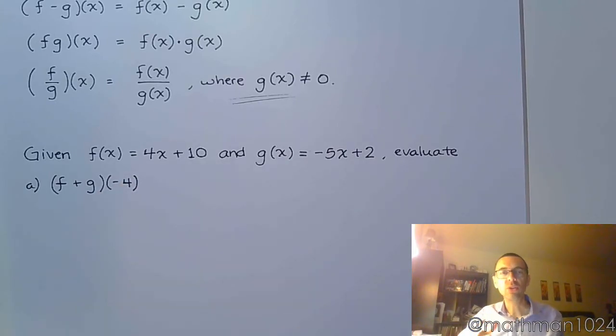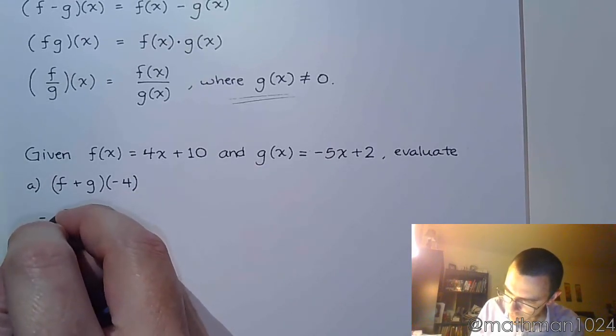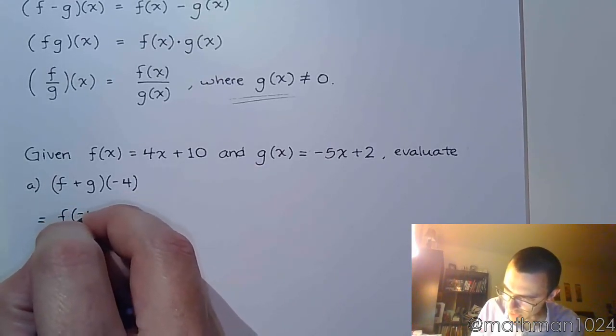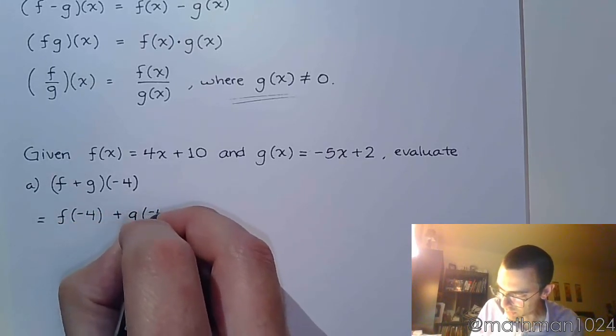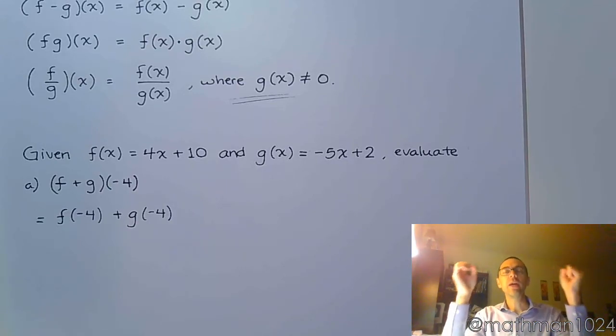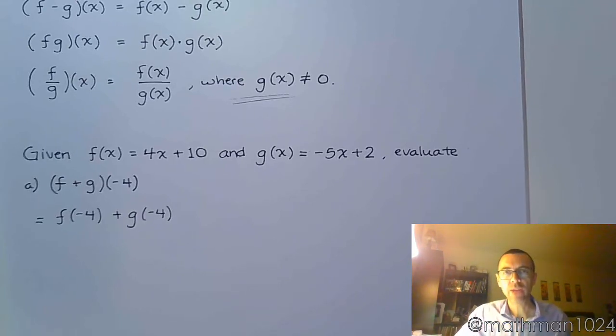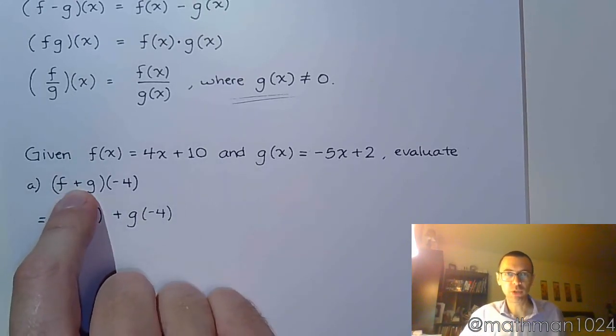The easier way, though, is to understand that all we need to do is say f(-4) + g(-4) like this. In other words, take f and evaluate that at negative 4. Take g and evaluate that at negative 4. So do them separately. And then bring those answers together according to whatever the function says. In this case, you want to be adding these guys.